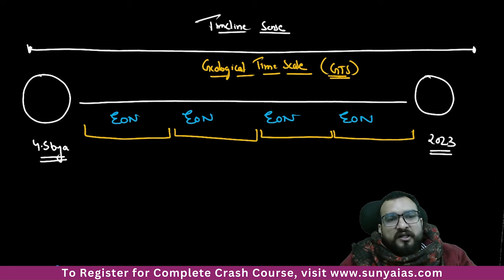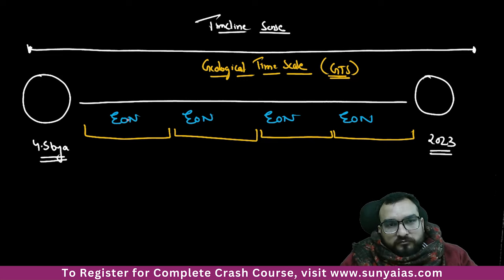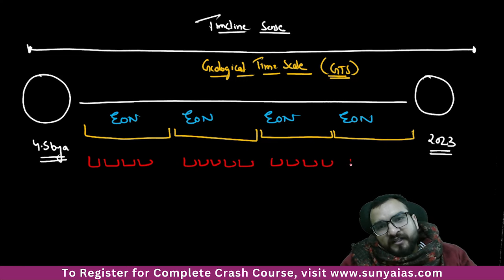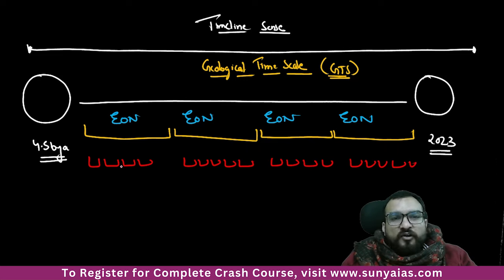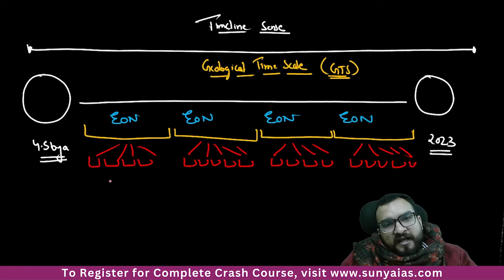Every eon has certain smaller chunks covering shorter periods. These eons are then divided into Eras.